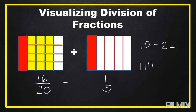We count: one, two, three, four, five, six, seven, eight, nine, ten. Then we group them by two: one-two, one-two, one-two, one-two, one-two. How many groups of two are there in 10? We have one, two, three, four, five. So 10 divided by 2 is equal to 5.